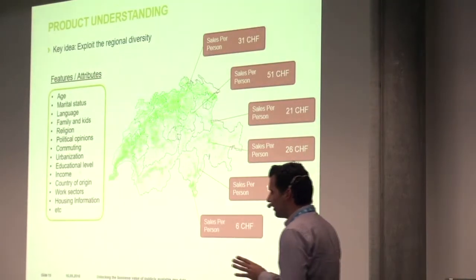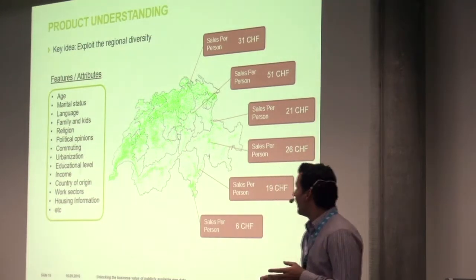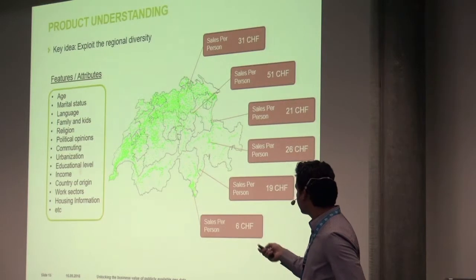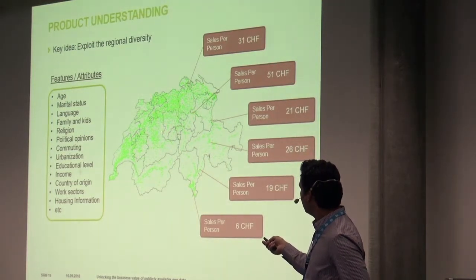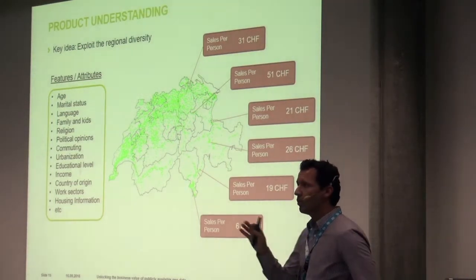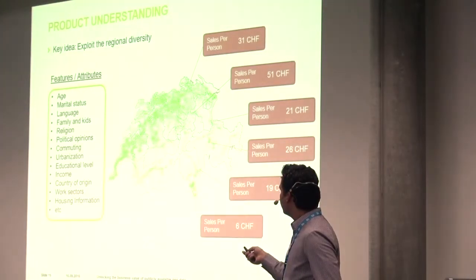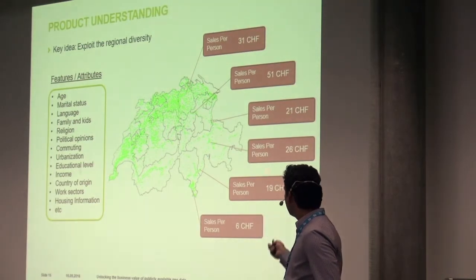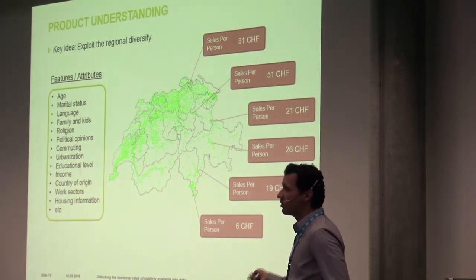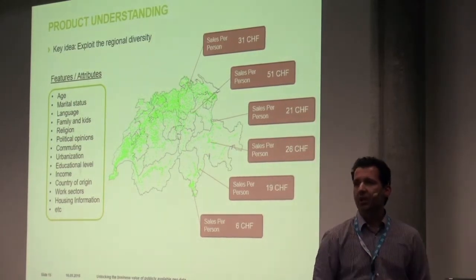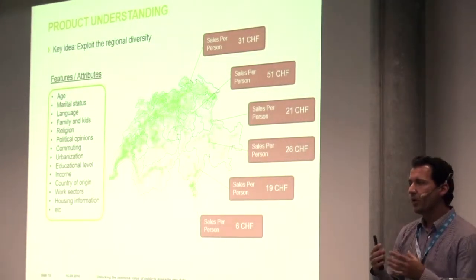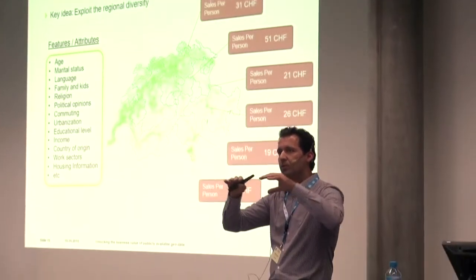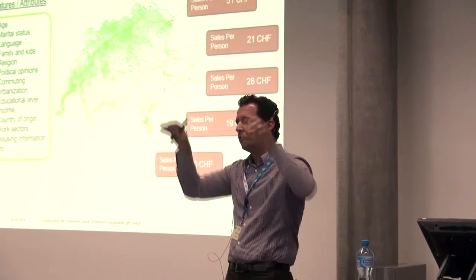The key idea here is exactly to exploit this regional diversity and use all the features which are diverse across these regions. You can see the centers of the political communities in Switzerland. The idea is to exploit the diversity we have with respect to these features alongside the diversity in sales of the product when we aggregate them at these regional levels — transforming a problem from the end-customer level to the regional level.